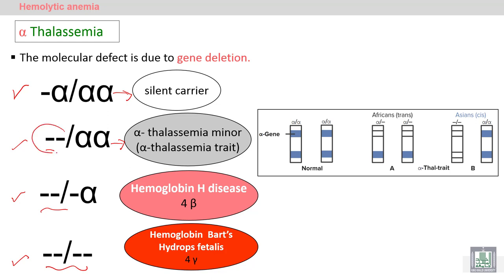We have a moderate to severe condition called Hemoglobin H, due to absence of three alpha globin genes and formation of four beta chains, forming an abnormal hemoglobin called Hemoglobin H, which consists of four beta chains. We also have an incompatible-with-life condition, which is the absence of all four alpha globin genes, known as Hemoglobin Barts.